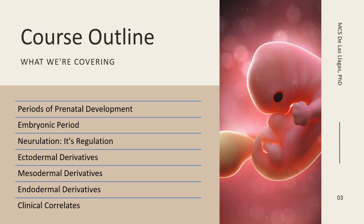For this lecture, we are going to talk about the different periods of prenatal development. Then we'll describe what the embryonic period is characterized by. One of the key events during the embryonic period is neurulation. We will also talk about the derivatives of the three germ layers, and as we go along our discussion, we will be incorporating some of the clinical correlates.